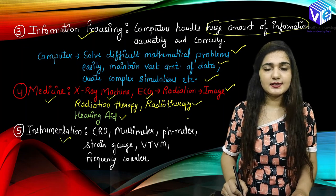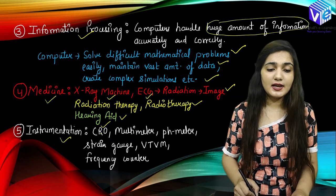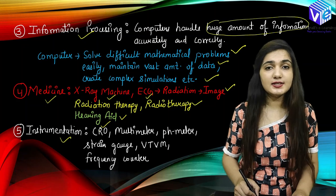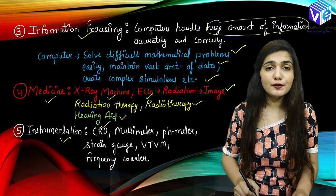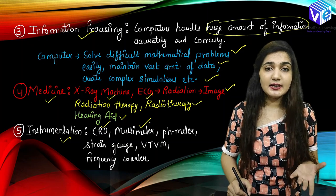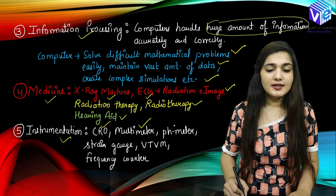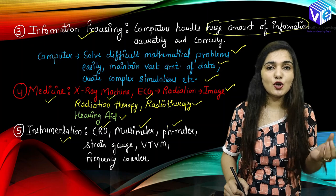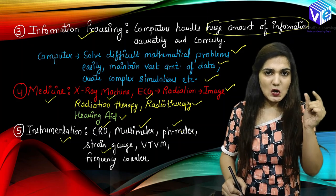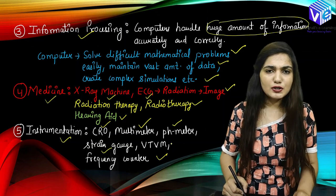Electronics is used in various instrumentation devices, some of which we use in our colleges as well. The CRO — cathode ray oscilloscope — is an electronic instrument that processes and displays digital as well as analog signals on a screen. The multimeter measures various parameters like current, voltage, and resistance — this is why it's called a multimeter. Electronics is also used in pH meters, strain gauges, VTVMs, and frequency counters, which are used in clocks and communication devices.